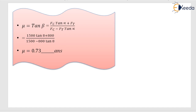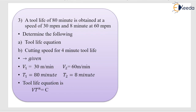Let us take one more example on tool life. A tool life of 80 minutes is obtained at a cutting speed of 30 meters per minute, and 8 minutes at 60 meters per minute. We need to determine: (a) the tool life equation and (b) the cutting speed for a 4-minute tool life. So v1 = 30 m/min with T1 = 80 min, and v2 = 60 m/min with T2 = 8 min.